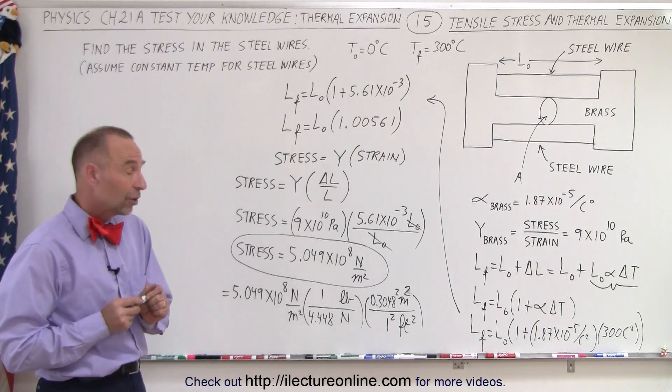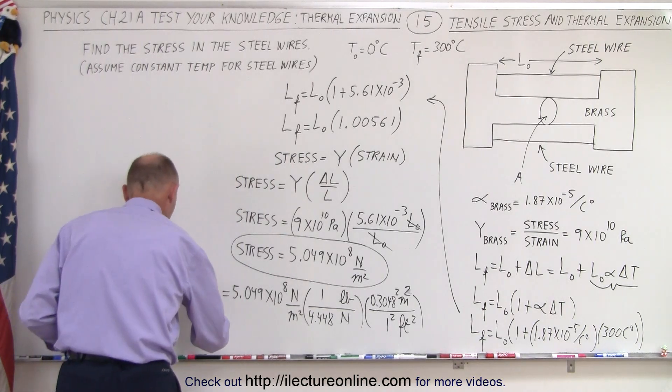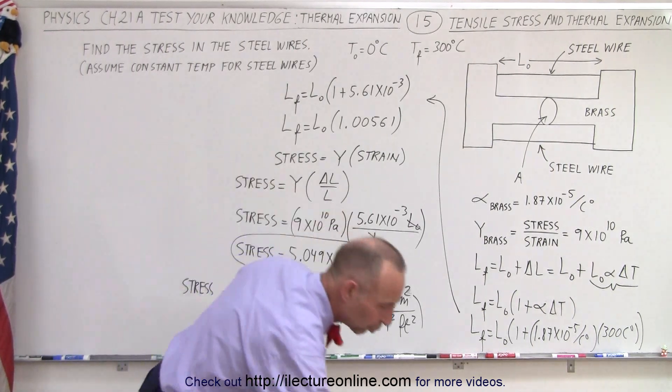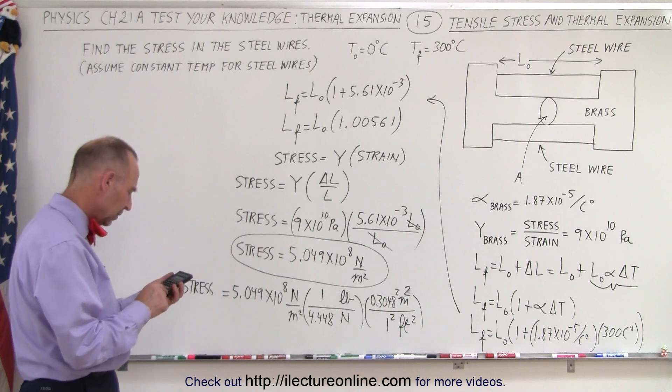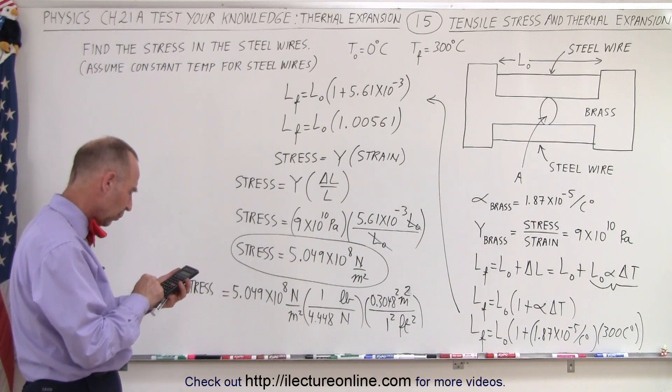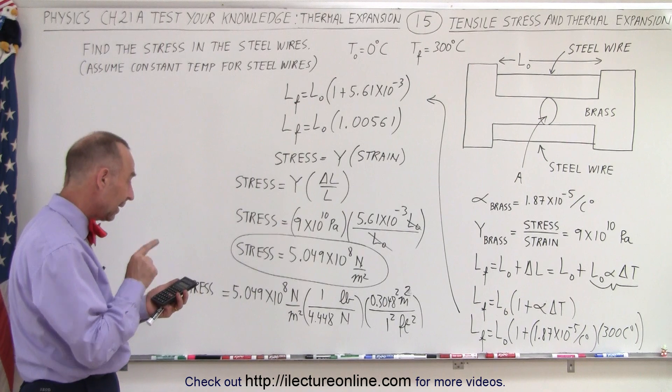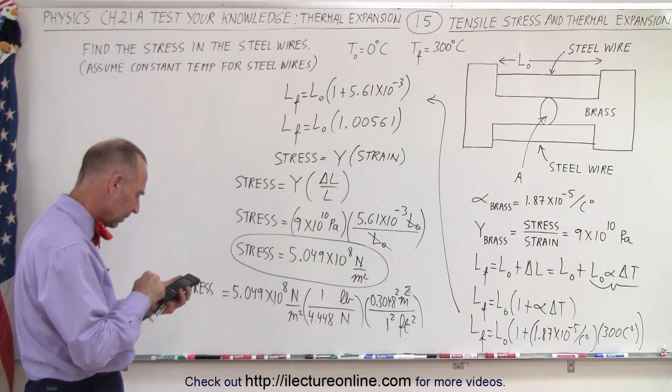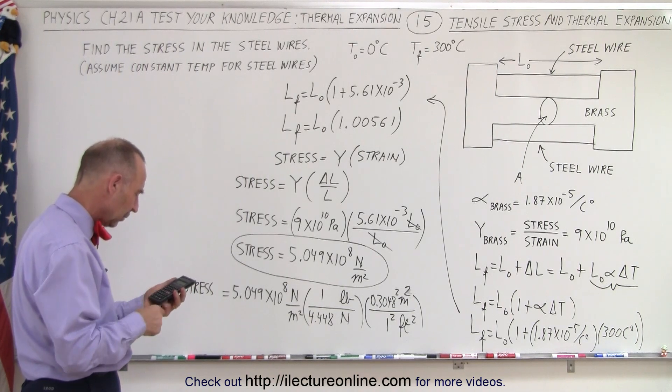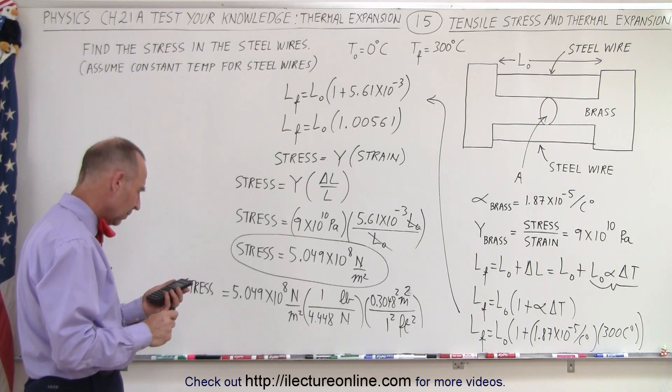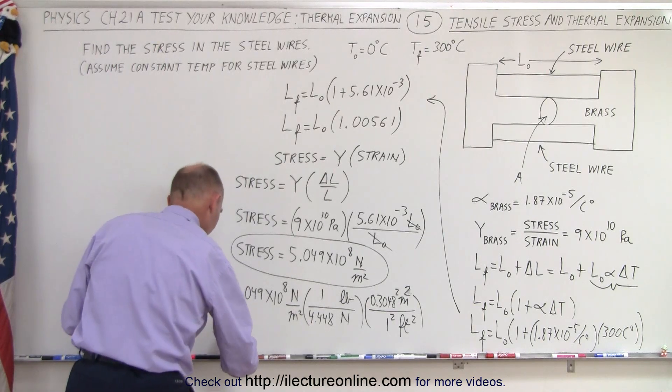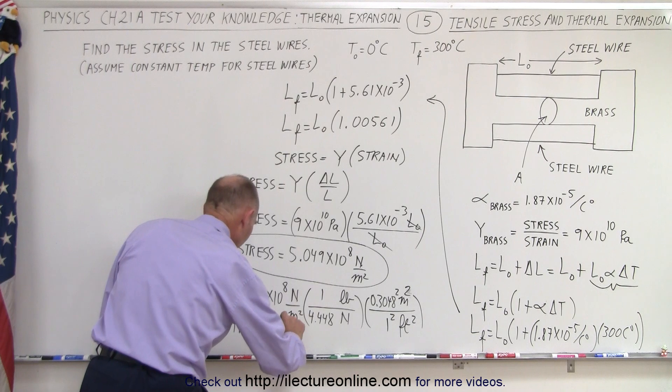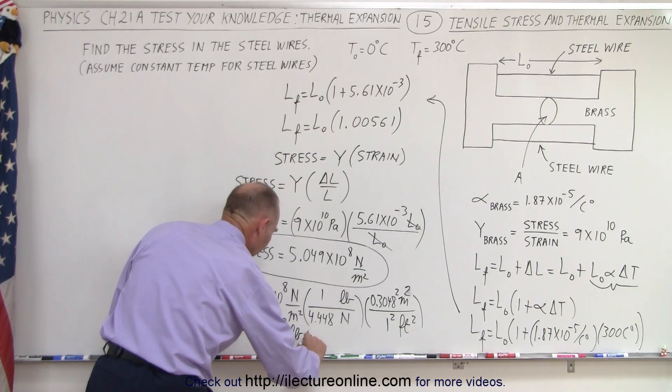So we divide by 4.448 and then we multiply times 0.3048 squared equals, and notice we now get 1.055 times 10 to the 7 pounds per square foot.